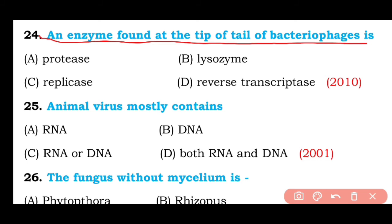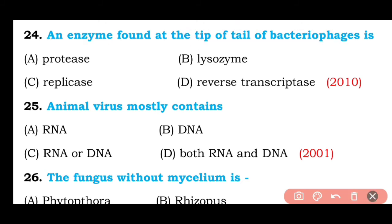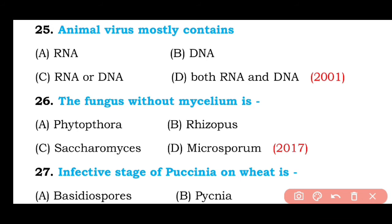Question number twenty-four: An enzyme found at the tip of the tail of bacteriophage is protease, lysozyme, replicase, or reverse transcriptase? The correct answer is option B — lysozyme enzyme is found at the tip of the tail of bacteriophage.